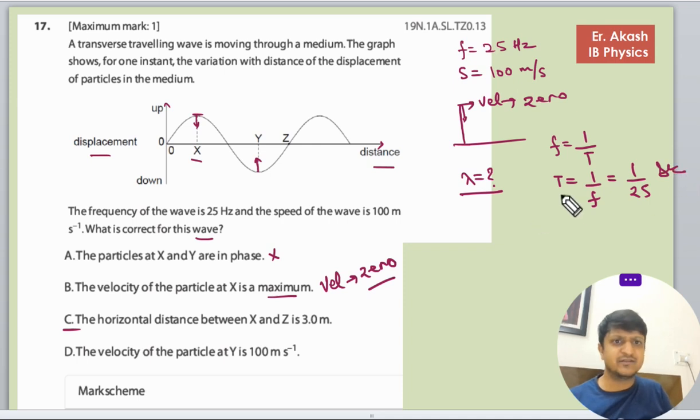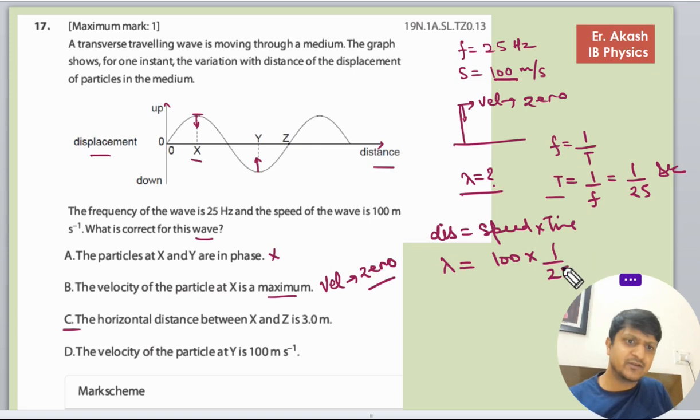So the distance equals speed into time, and lambda equals the speed, that is 100, and time is 1 by 25. So this is 4 meters.